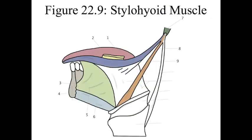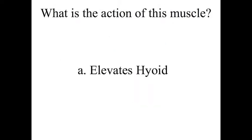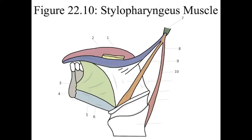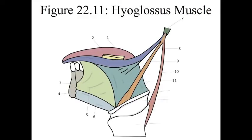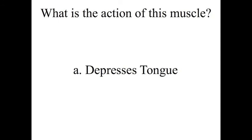Number 9 is the stylohyoid muscle, which elevates the hyoid bone. Number 10 is the stylopharyngeus — this elevates and widens the pharynx. Number 11 is the hyoglossus, connecting the hyoid bone and the glossus or the tongue; it depresses the tongue.